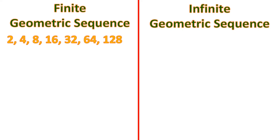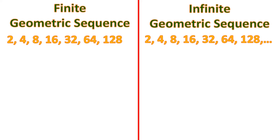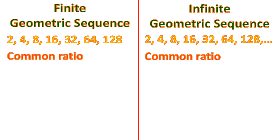Both sequences have a common number multiplied to each term. We also have another sequence with the same terms, except there is a comma and three dots after 128, and that makes it an infinite geometric sequence. Both have a common ratio — since it's times 2 for each term, r equals 2, where r means the common ratio.